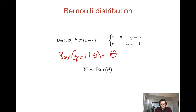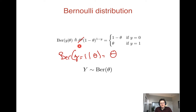One minus theta to the power of zero becomes one, so we get just theta. Conversely, if y equals zero, the exponent of the first term becomes zero, so the whole term becomes one. The exponent of the second factor becomes one and we get just one minus theta. So all these ways are equivalent ways of writing the same thing. This syntactic trick where we use the exponent being either zero or one to select one of the two options — we're going to see it a bunch of times.